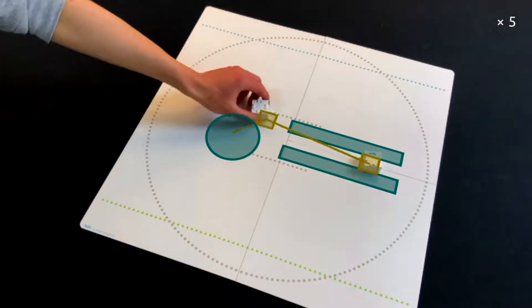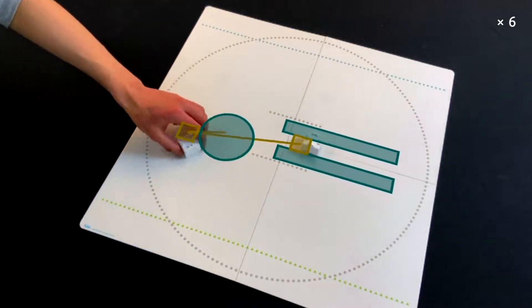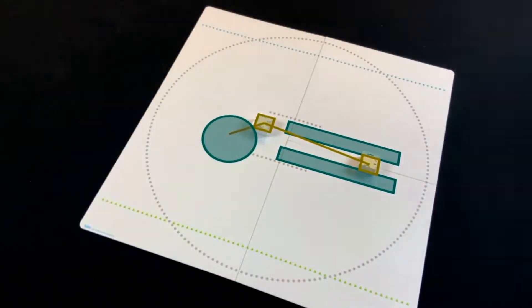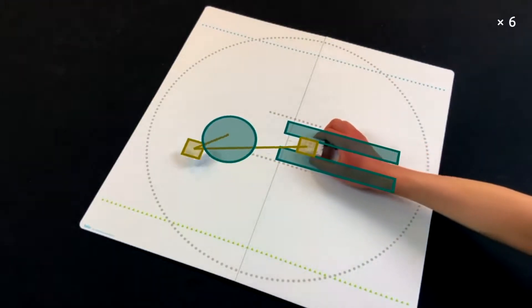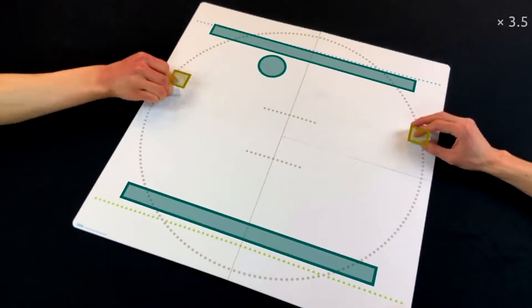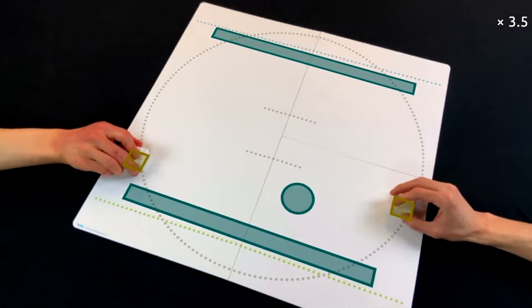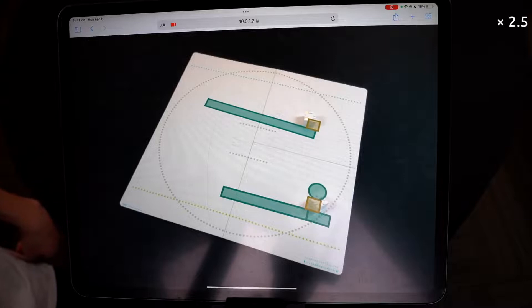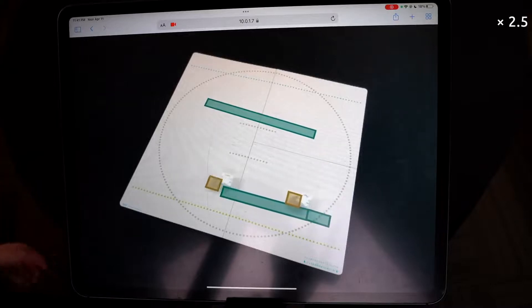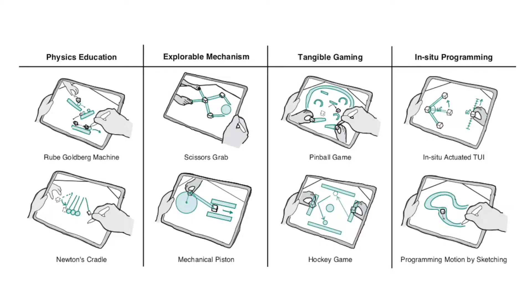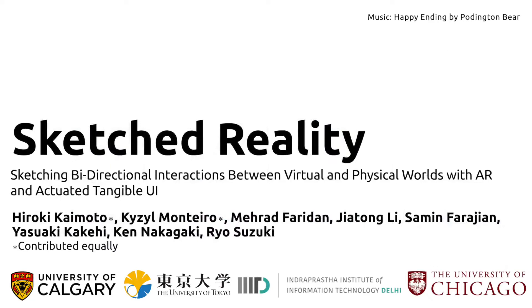This paper contributes a set of novel interactions and a design space of bi-directional augmented reality sketching and demonstrates a series of potential applications such as tangible physics education, explorable mechanisms, tangible gaming for children, and in-situ robot programming via sketching.